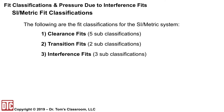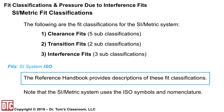For the SI metric fit, the classifications are clearance fits with five subclassifications, transition fits with two, and interference fits with three. The reference handbook provides descriptions of all of these subclassifications. Also note that the SI metric system uses the ISO symbols and nomenclature.